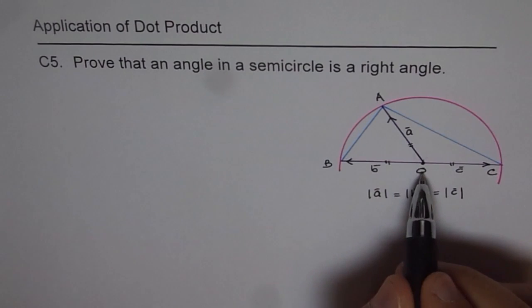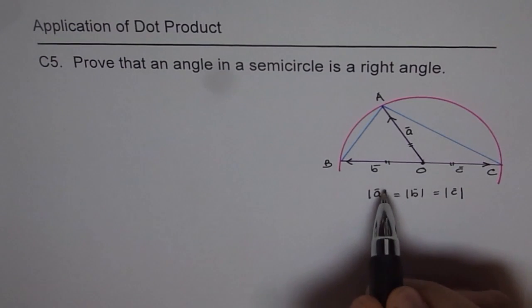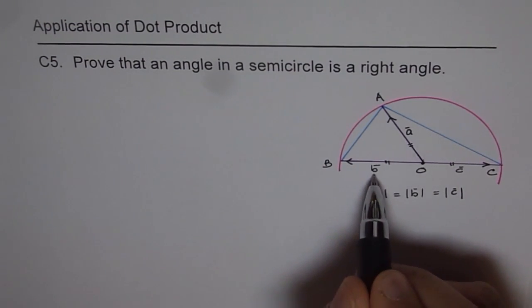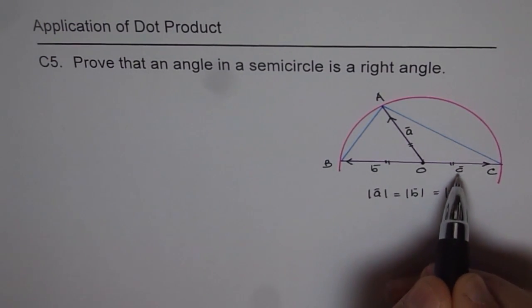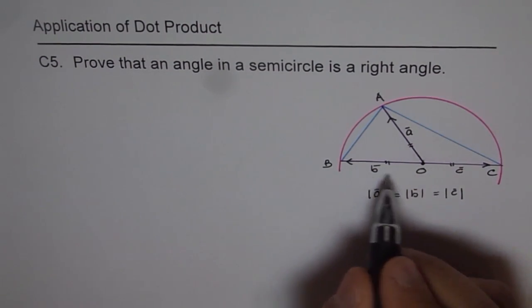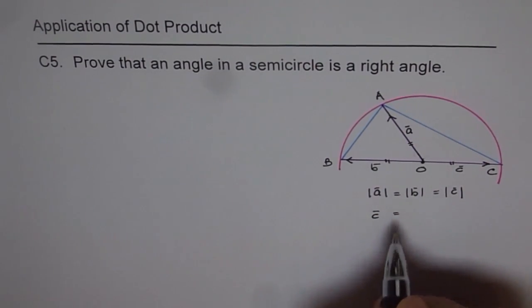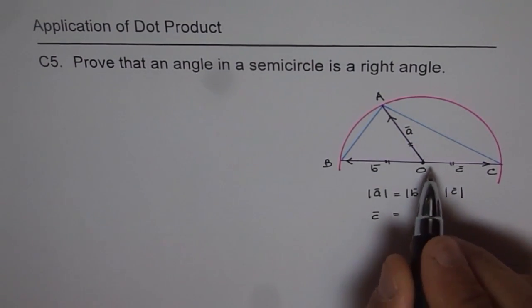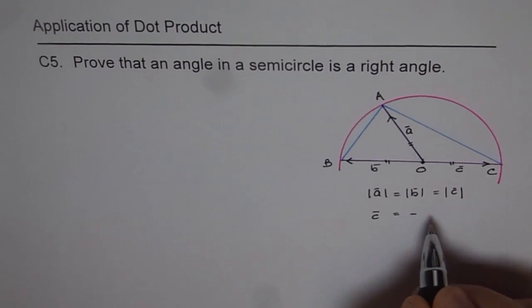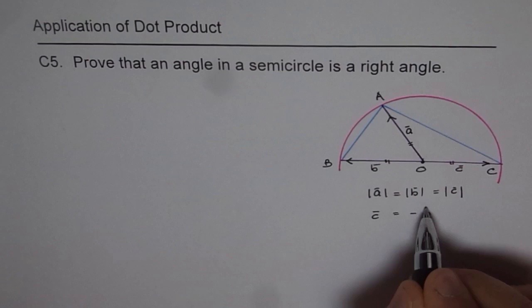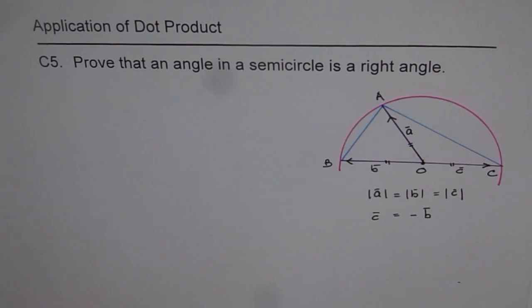Also you will notice that O is my origin, so OA is the vector A, OB is vector B, and OC is vector C. Now as you can see, vectors C and B are equal and opposite. So we can write vector C as minus of vector B. I'm telling you these things because I'm soon going to use them all.